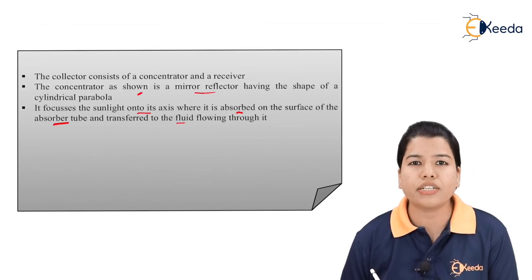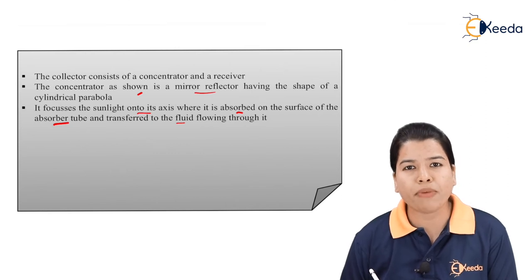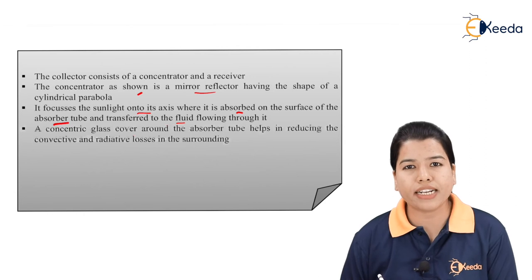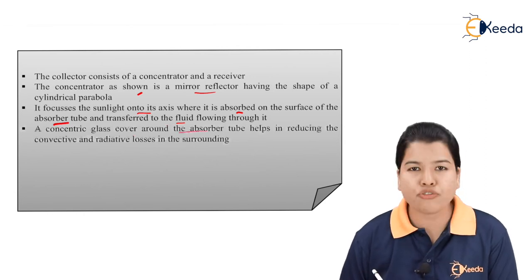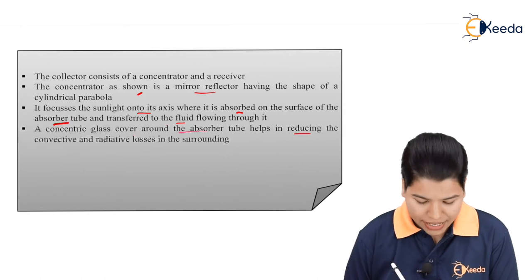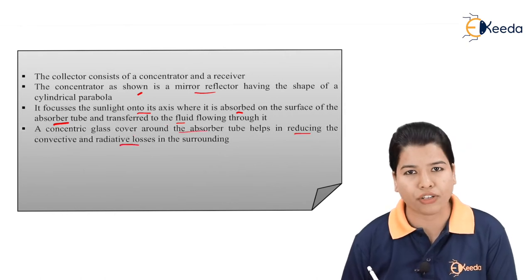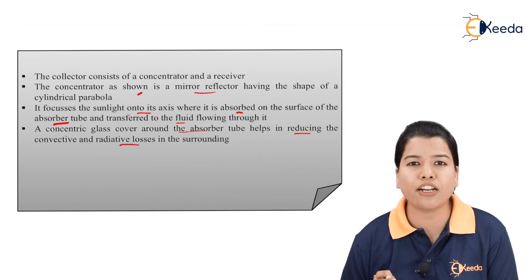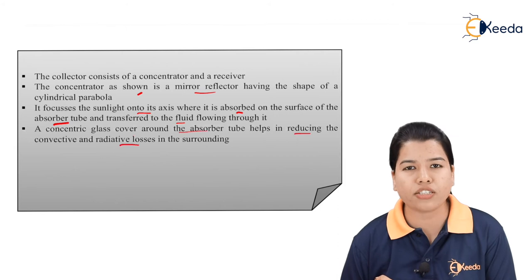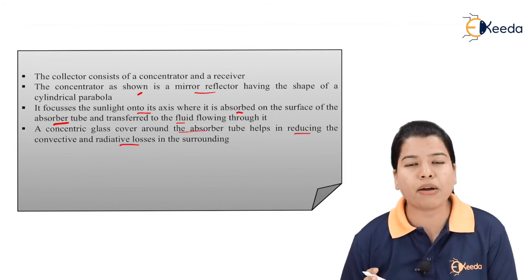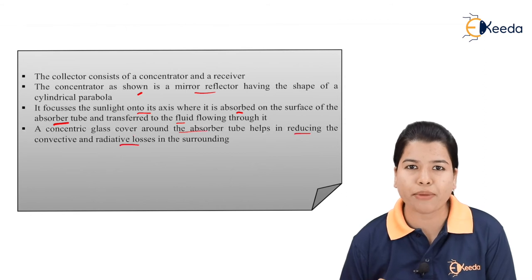The heat which is transferred will be absorbed by the fluid. A concentric glass cover around the absorber tube will help in reducing the convective and radiative losses in the surrounding. In case of solar plate collectors, there are certain losses of radiation in convection and radiation. In case of concentrator, these losses are minimized. As a result, maximum amount of energy from the radiation can be utilized.